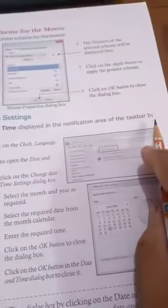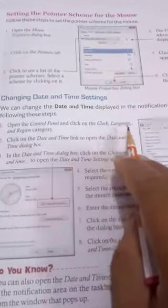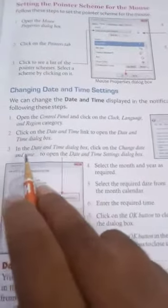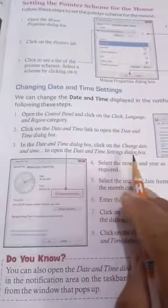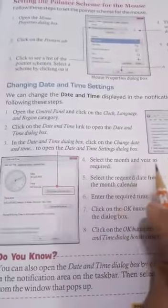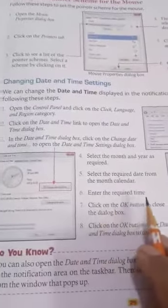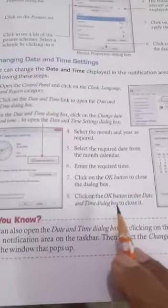Now, changing date and time settings. We can change the date and time displayed in the notification area of the taskbar. Open the Control Panel and click on Clock, Language, and Region. Click on the Date and Time link. In the dialog box, click Change Date and Time, select the month and year, select the required date, enter the required time, and click OK. Then click OK again to close.